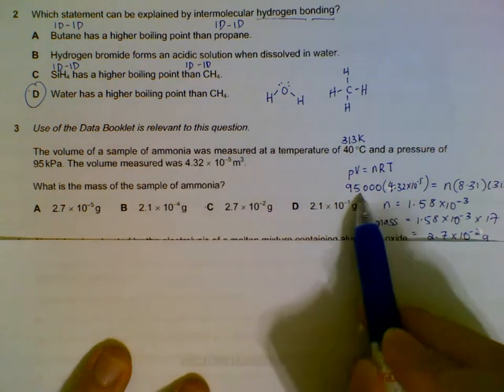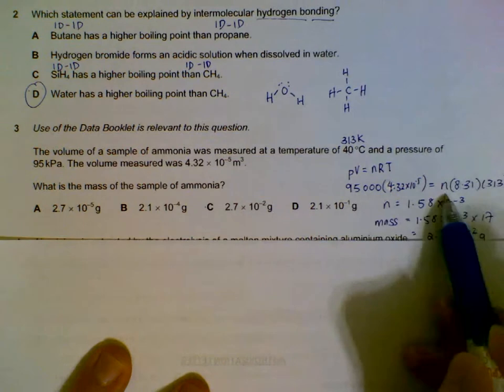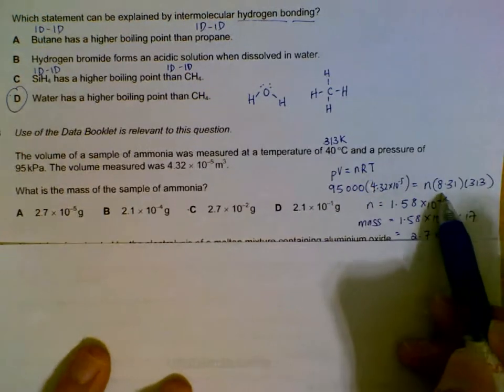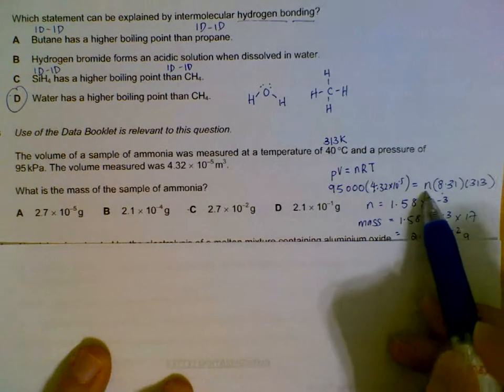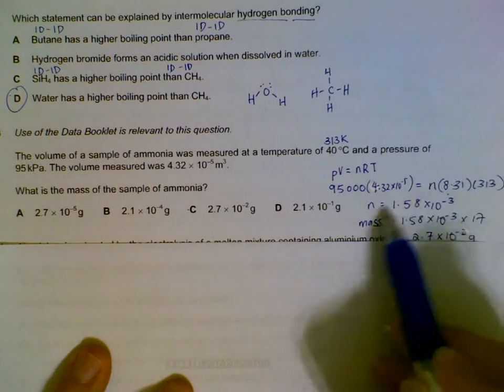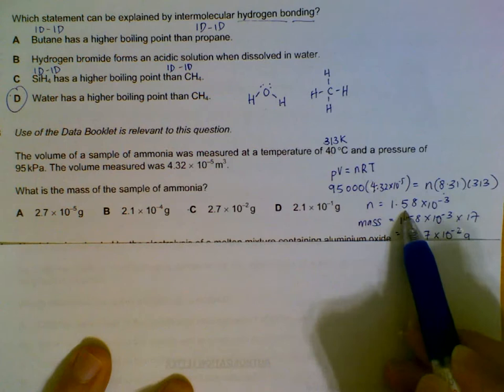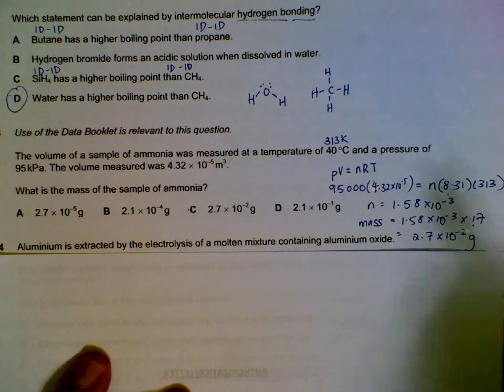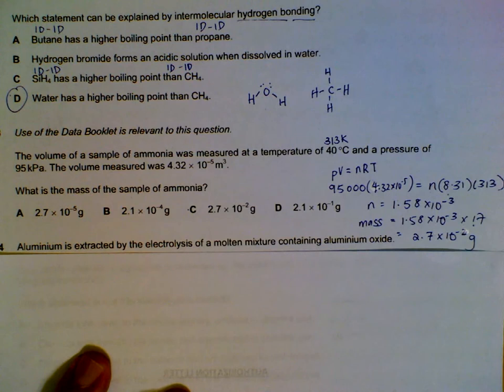So we put in all the values here. Our gas constant will be 8.31 for these units. The only unknown we have will be number of moles, so we find out n equals 1.58 times 10 to the power of minus 3. Then we multiply by Mr of ammonia, which we get 2.7 times 10 to the power of minus 2 grams.